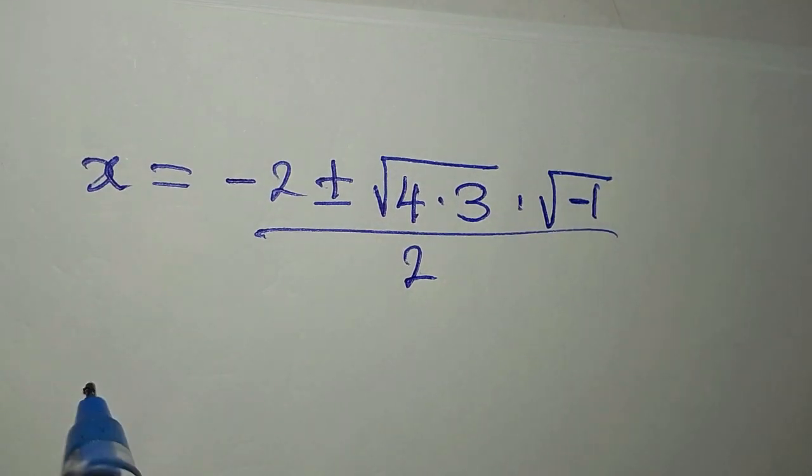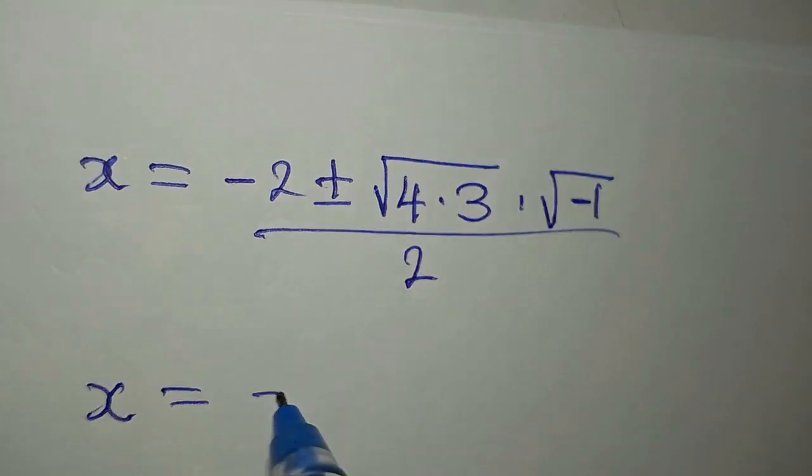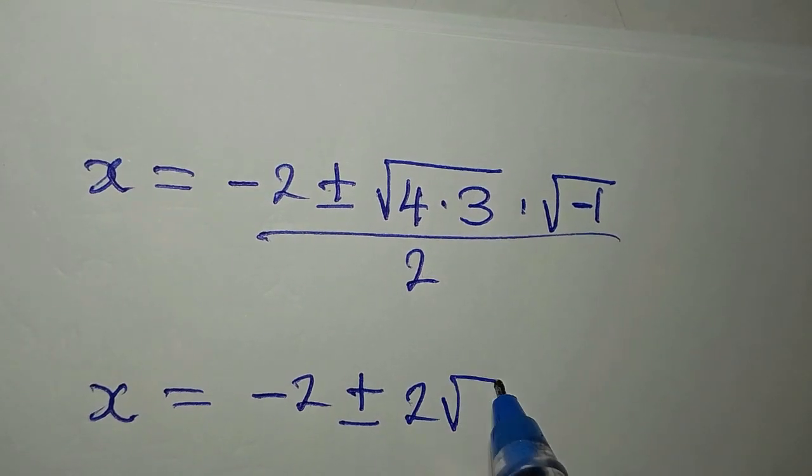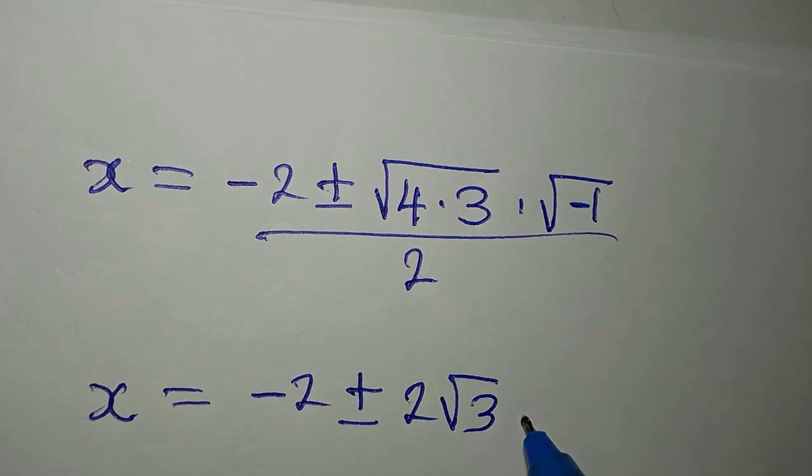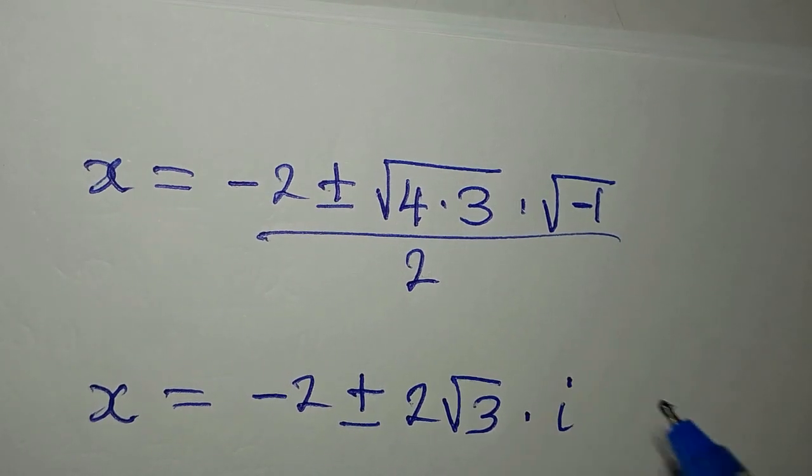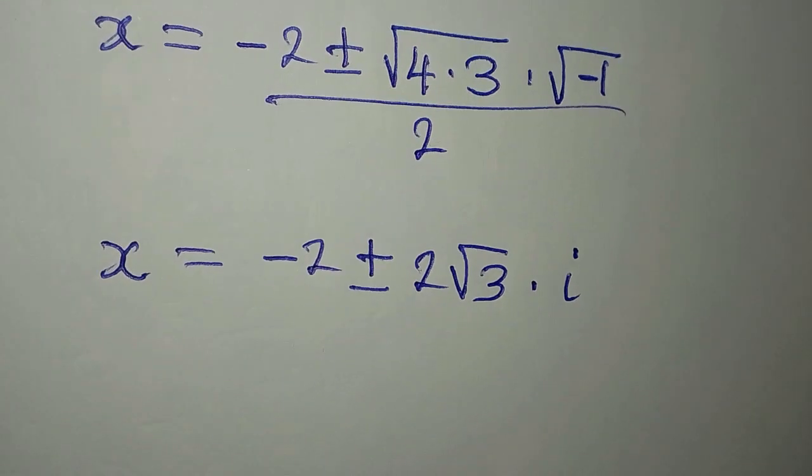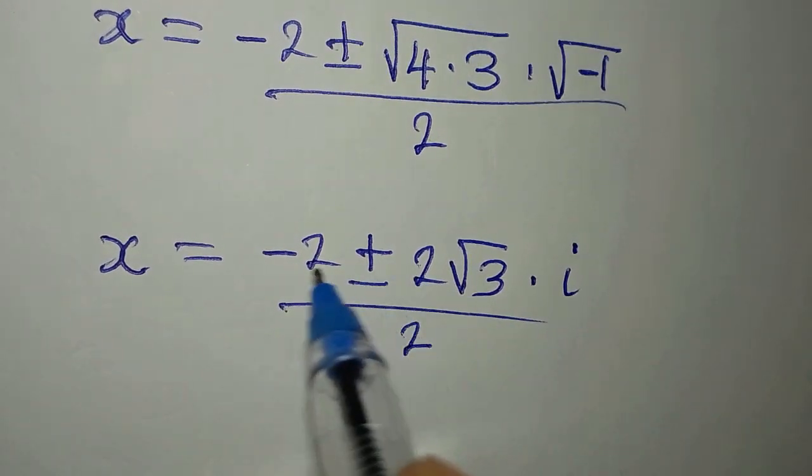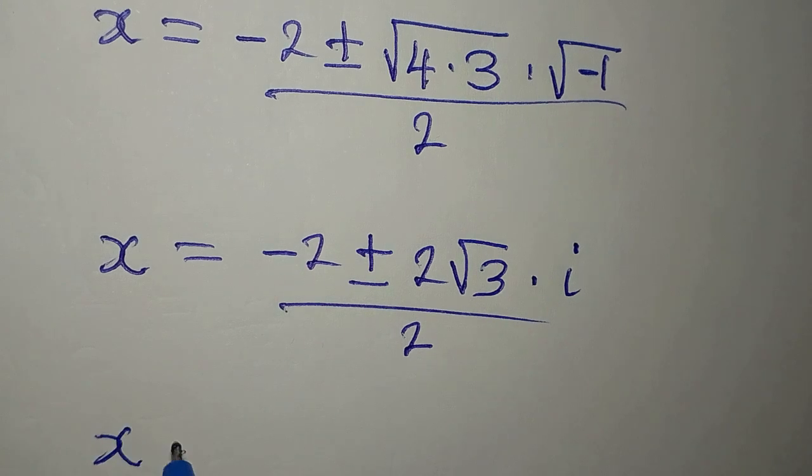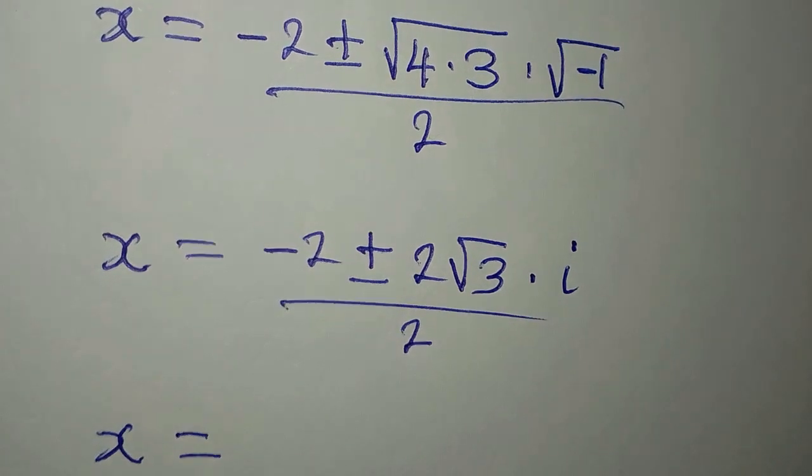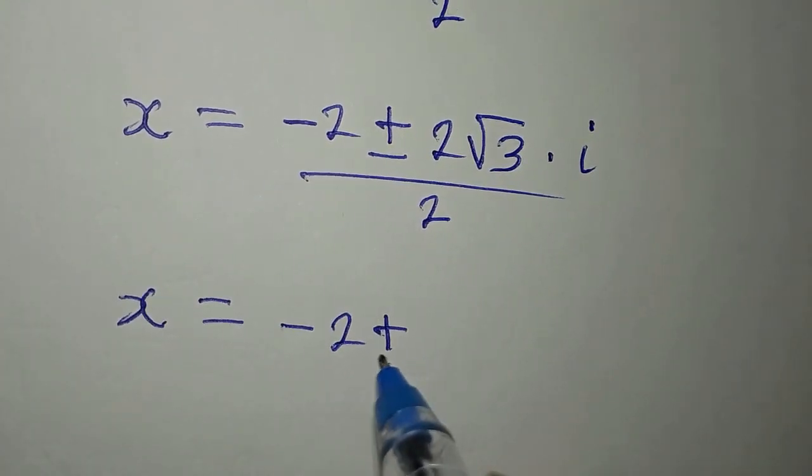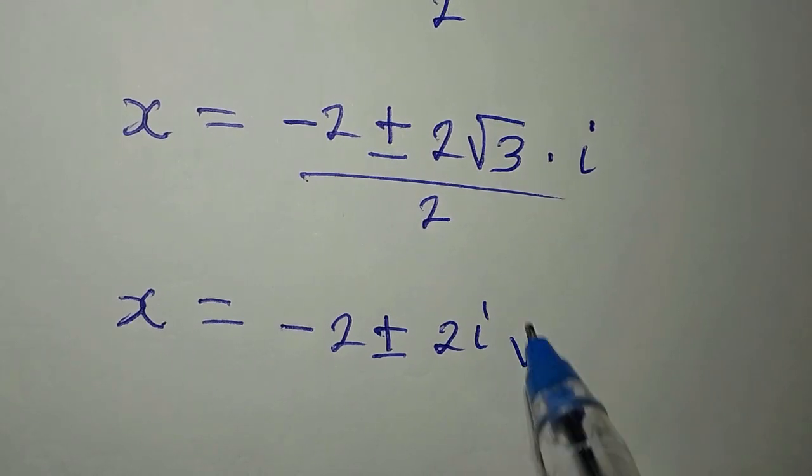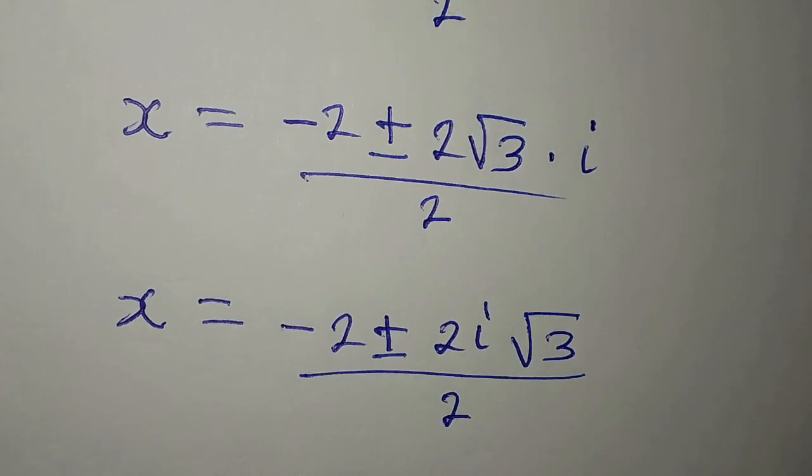Our x will now be minus 2 plus or minus, square root of 4 is 2, then multiply by root 3, and square root of negative 1 is imaginary, so we write i, then we divide by 2. We can arrange the numerator so that x equals minus 2 plus or minus 2 times i, that would be 2i, then we have root 3, divided by 2.